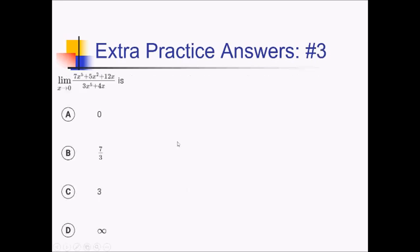For this problem, we're trying to find the limit as x approaches 0 of this rational function. Just mentally plugging in 0, you can see that you're going to get 0 in both the numerator and denominator because all the terms have x's in them, so they all get zeroed out. That means we're going to have to do some factoring here, and since these all have x's in them, we can factor an x out of everything.